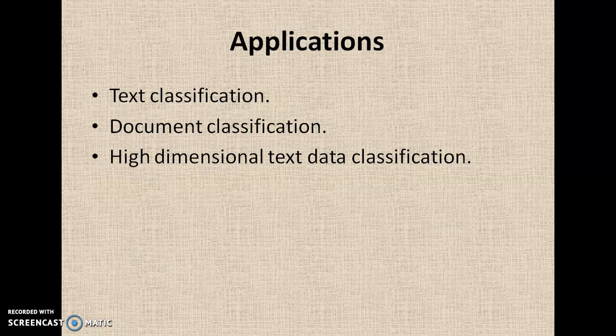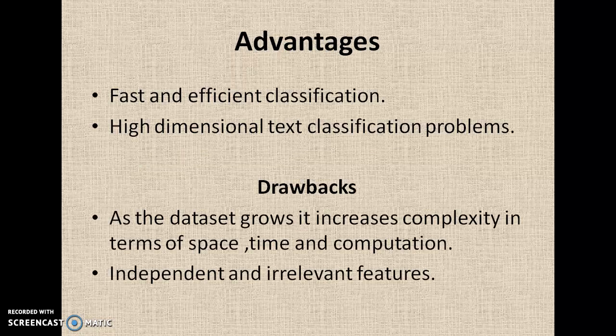Let us see what are the various kinds of applications. The Naive Bayes algorithm is basically used for text classification, document classification, and high-dimensional text classification. Naive Bayes is the best one for text classification. The first advantage is it is very fast and very efficient for text classification, and for high-dimensional text it classifies in a fast and efficient manner.